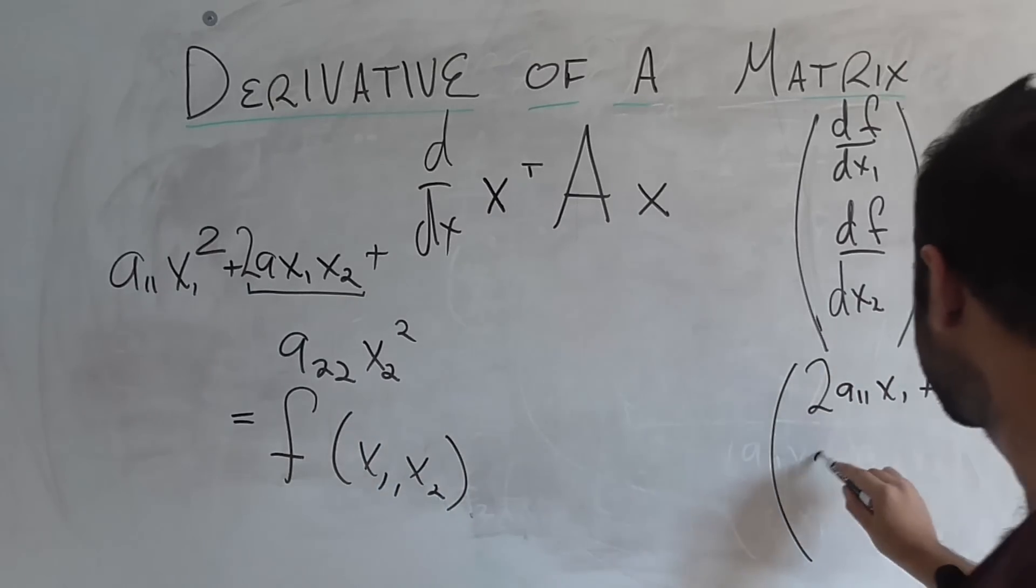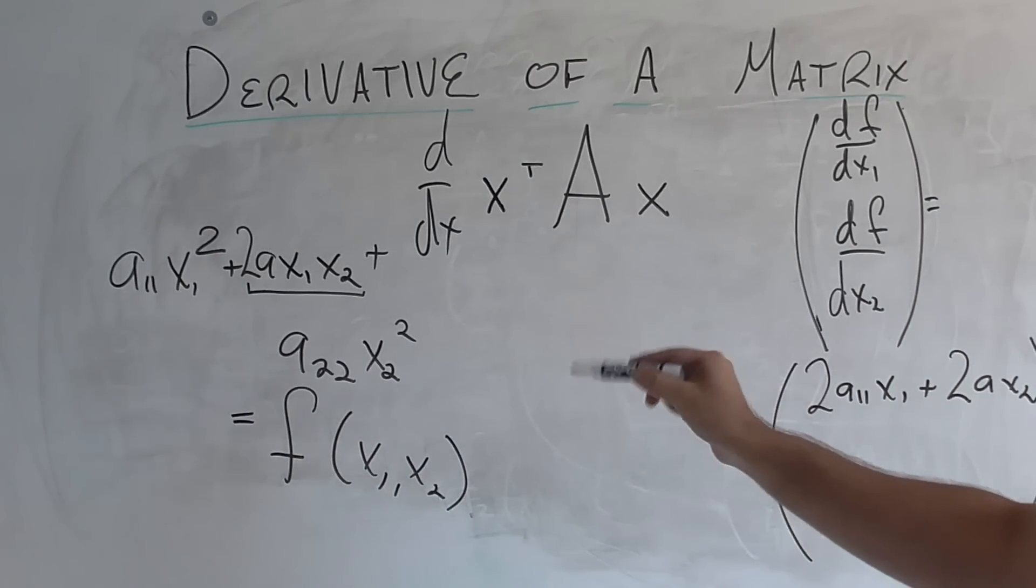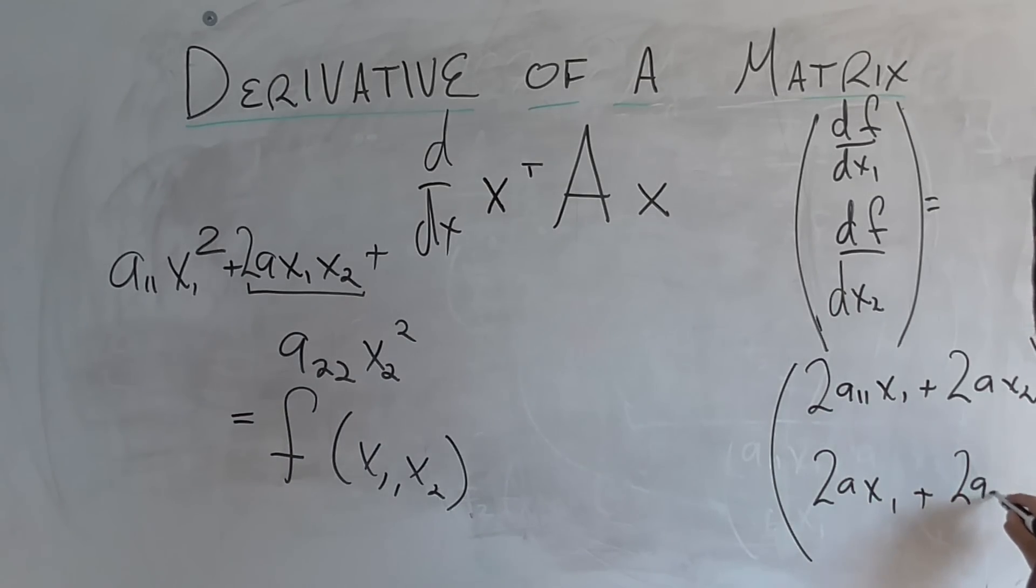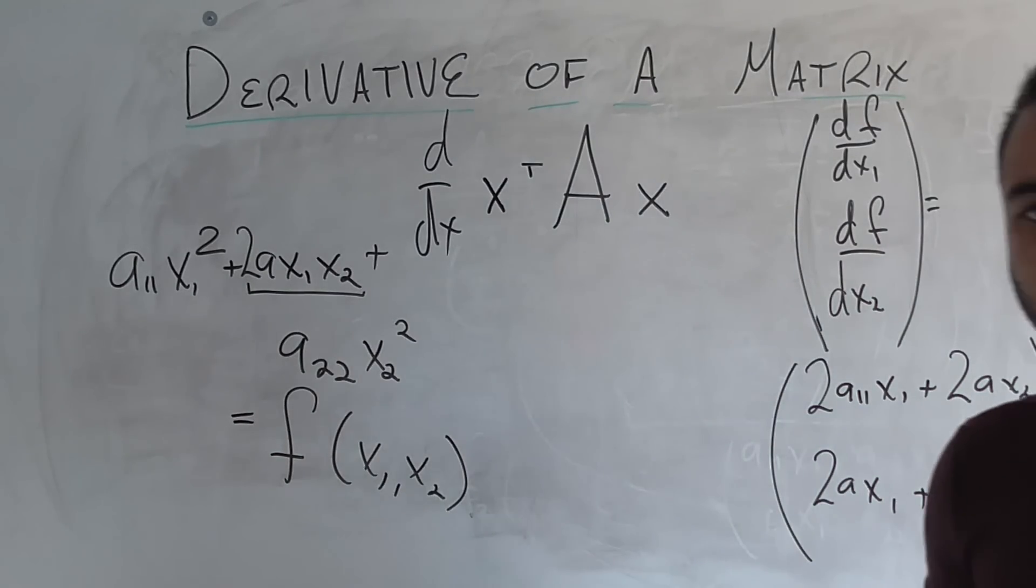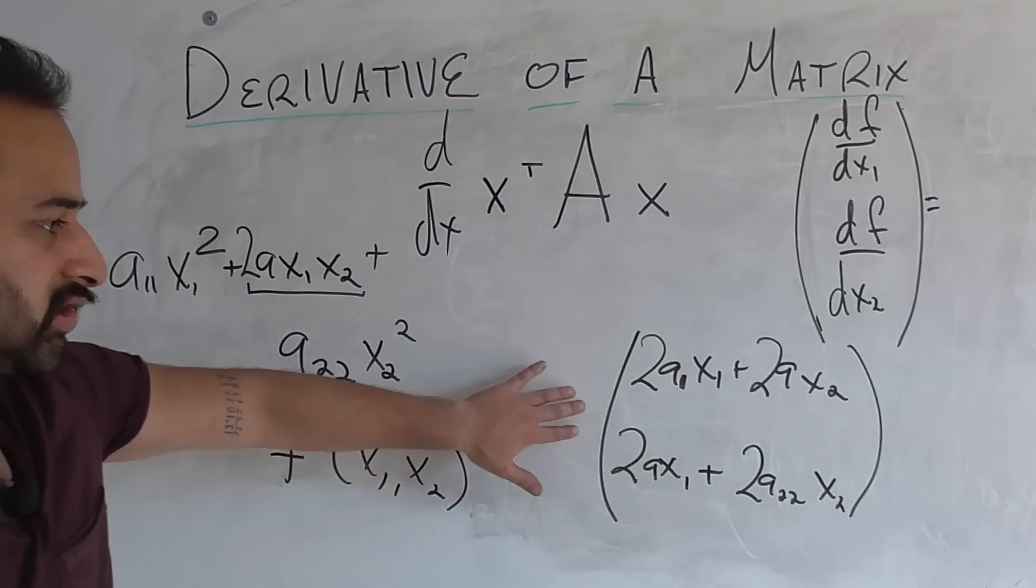What is df with respect to dx2? That's going to be 2ax1 plus 2a22x2. So that is the derivative there.